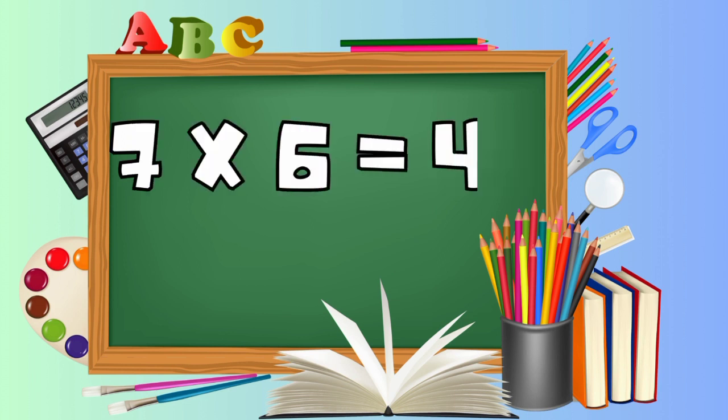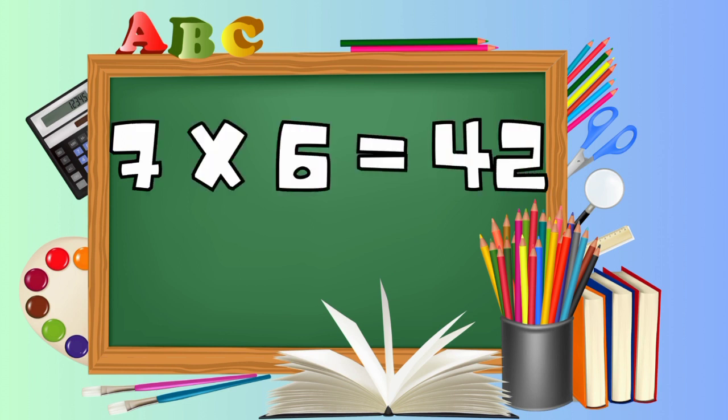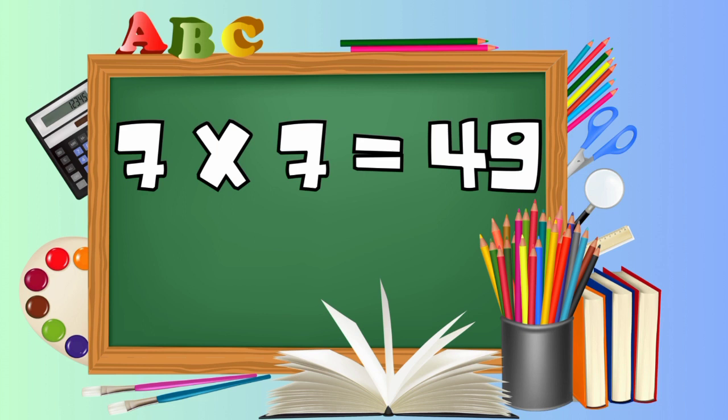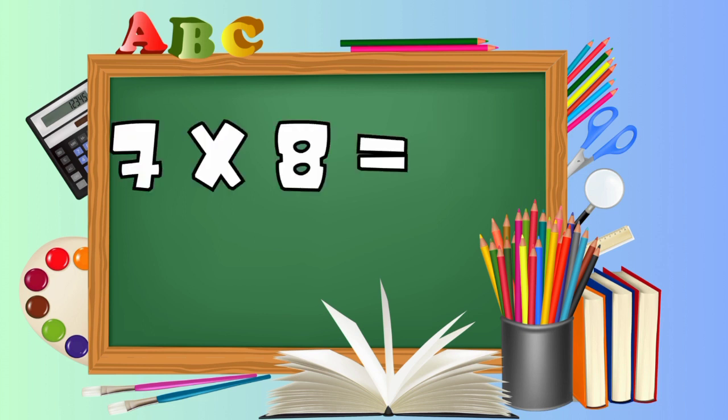Seven fives are thirty-five. 7 6's are 42. 7 7's are 49.